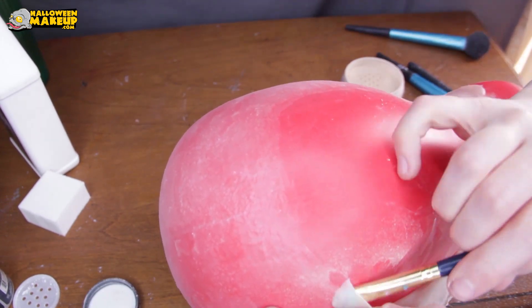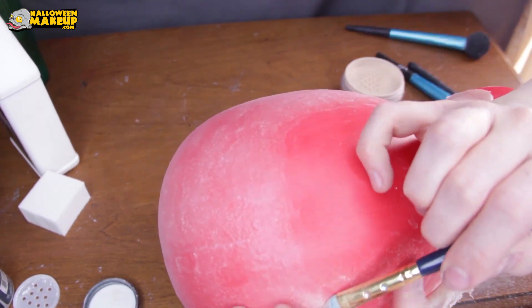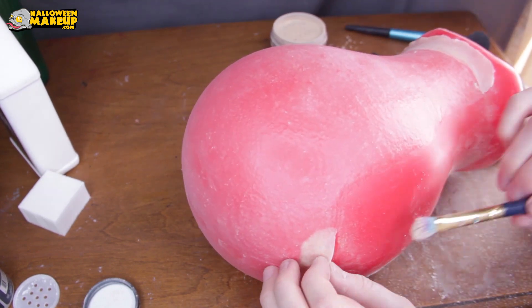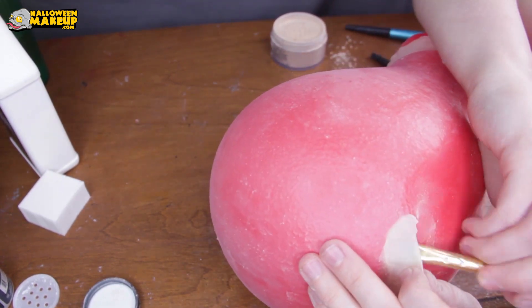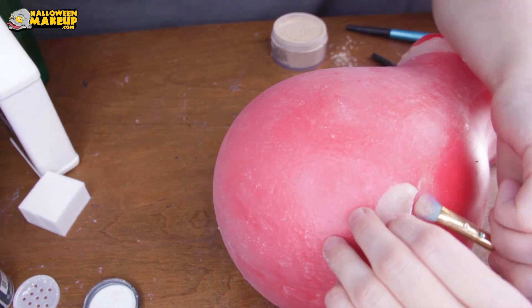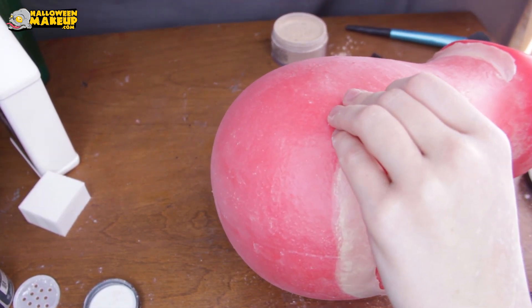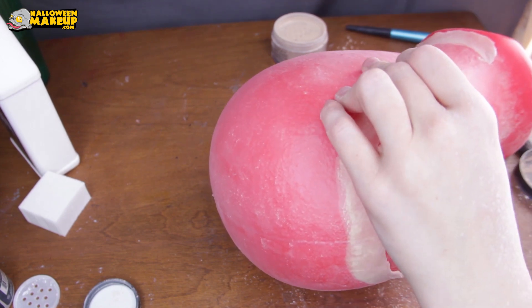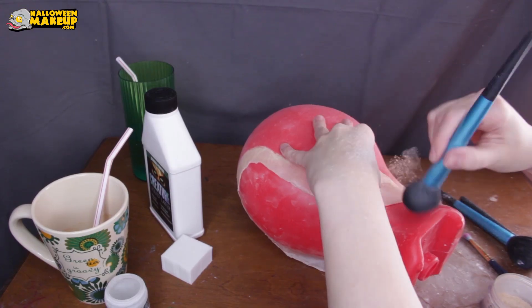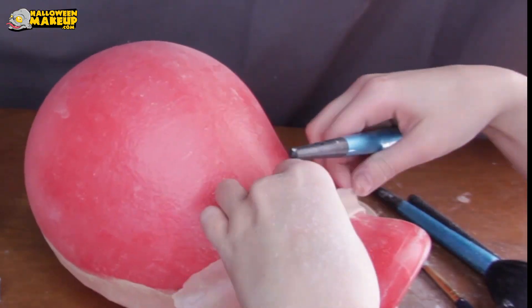So just work in tiny sections at a time and just drown this thing in more powder. I usually start around the edges and then once the edges are all done we get to very carefully start from the back, start peeling up the back of the bald cap.